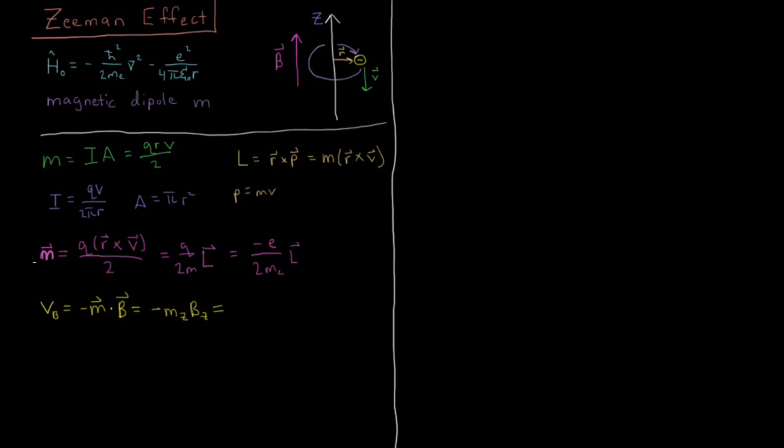So substituting in what we have up here for the value of m, that's going to give us the magnitude of the electron's charge times the z component of the magnetic field over twice the mass of the electron times its angular momentum in the z direction.